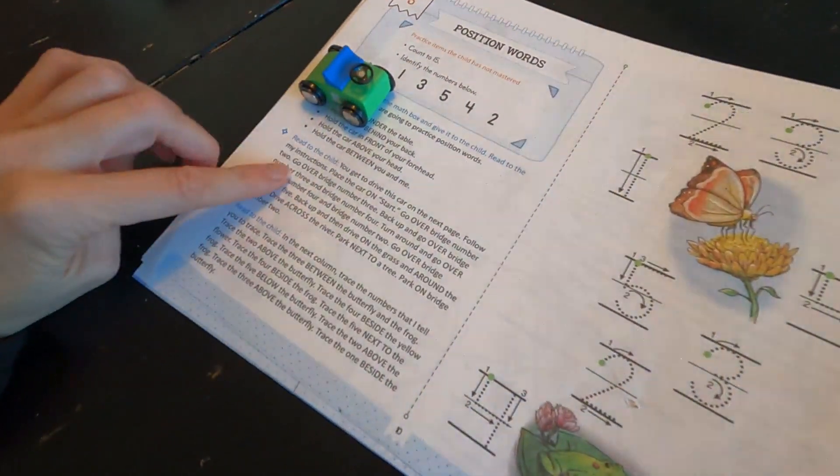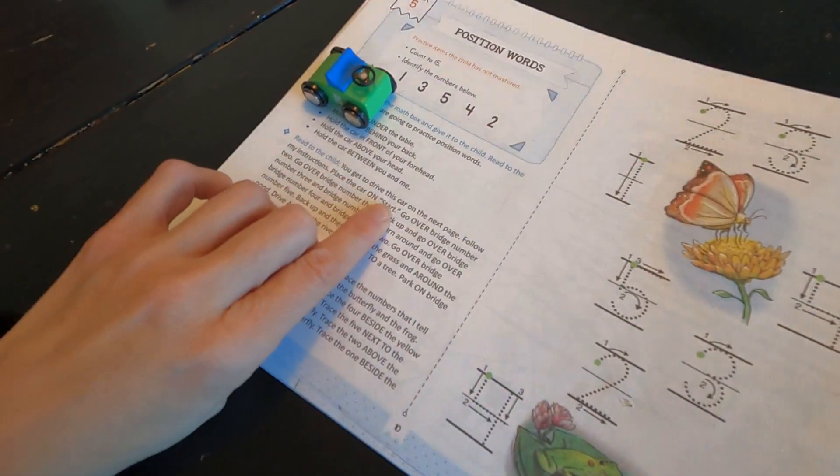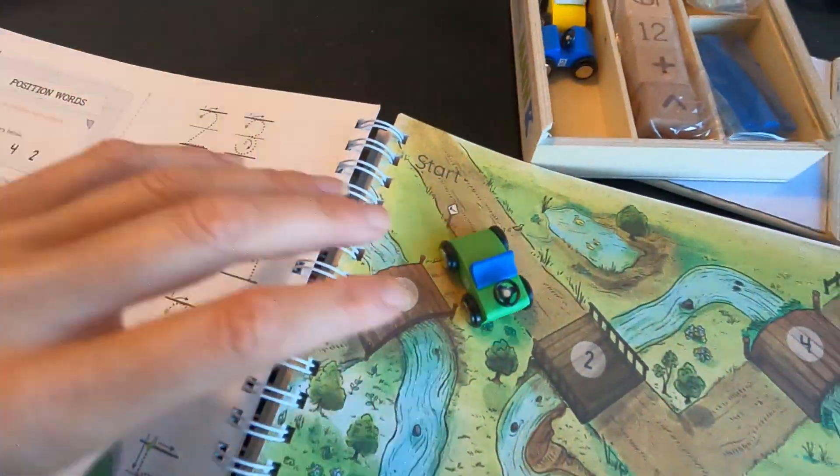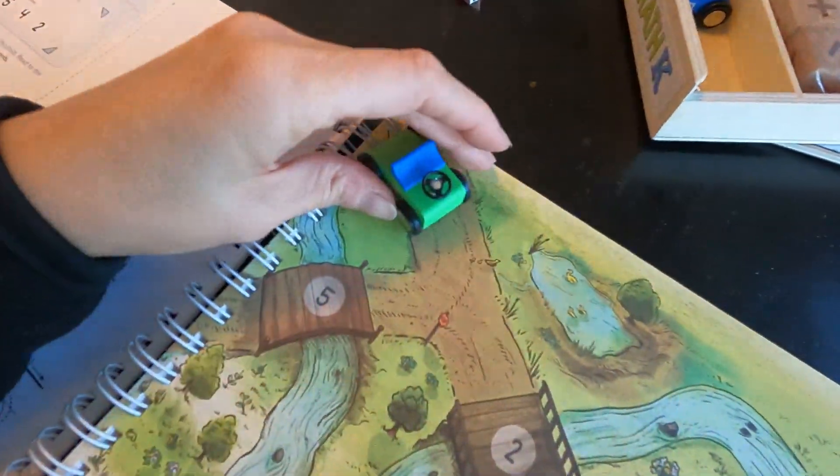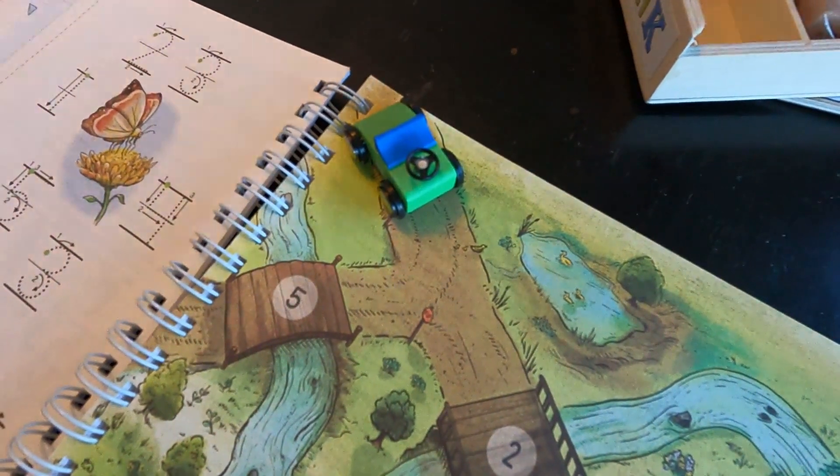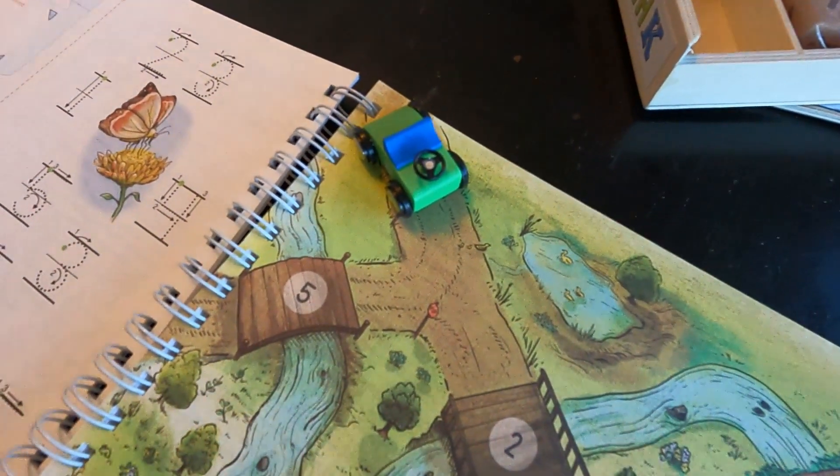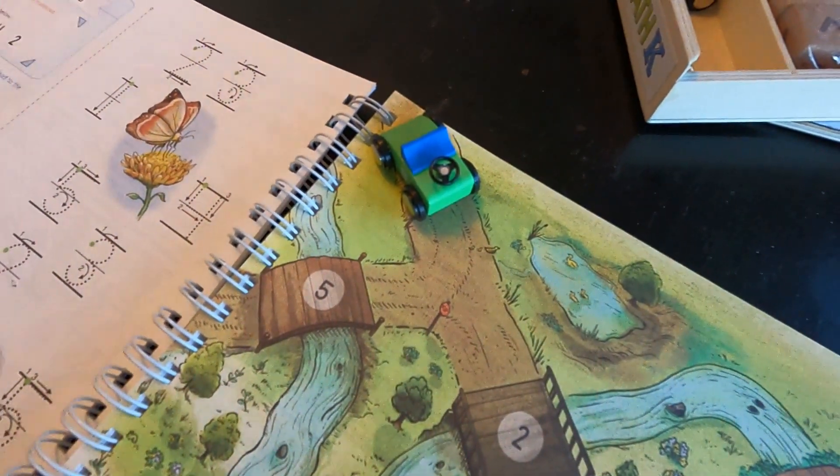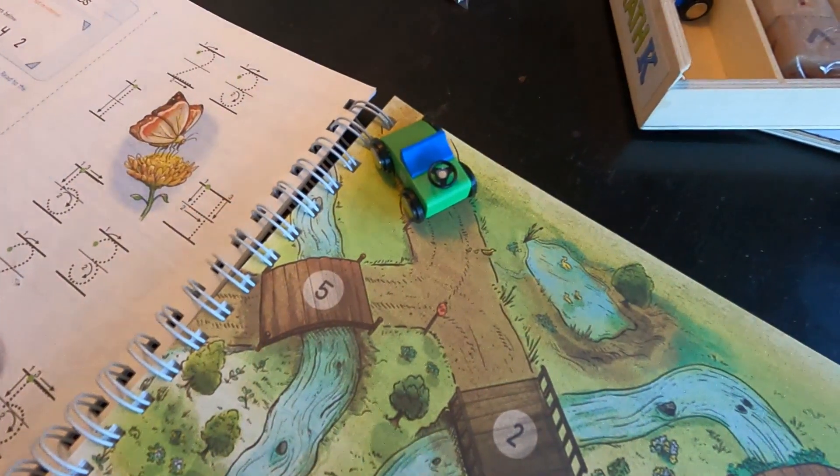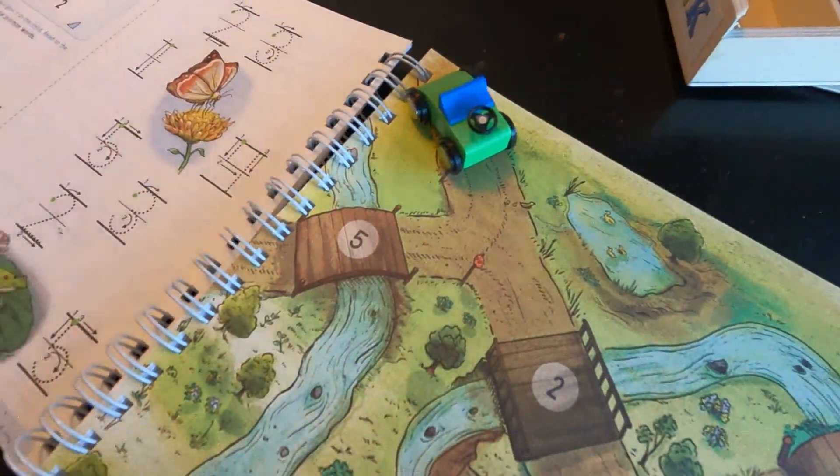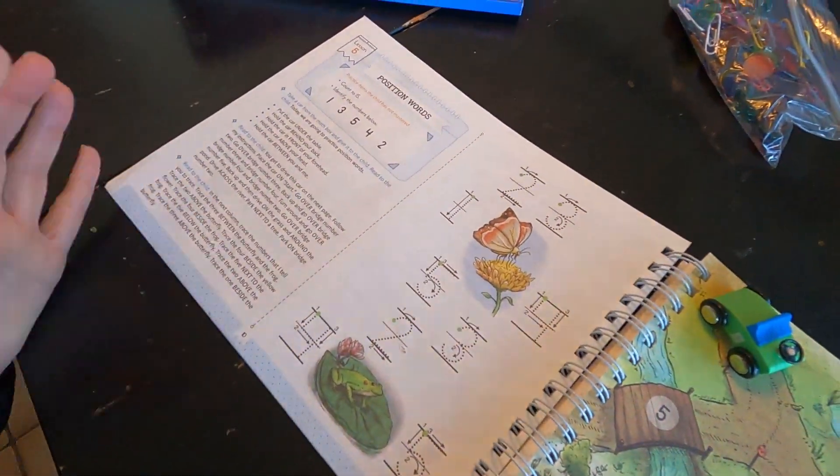Now we read to the child: you get to drive this car on the next page. Follow my instructions. Place the car on start. Go over bridge number two, go over bridge number three, back up and go over bridge number three and bridge number four, turn around and go over bridge number four and bridge number two, go over bridge number five, back up and then drive on the grass and around the pond, drive across the river, park next to a tree, park on the bridge.